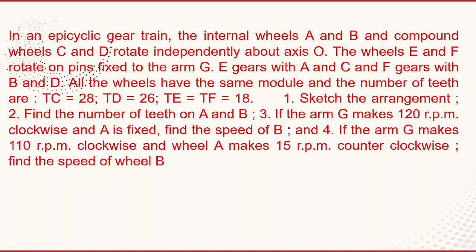All the wheels have the same module and the number of teeth are: TC equals 28, TD equals 26, TE equals TF equals 18. State the arrangement. Find the number of teeth on A and B. If the arm G makes 120 RPM clockwise and A is fixed, find the speed of gear wheel B. Fourth part: if the arm G makes 110 RPM clockwise and wheel A makes 15 RPM counterclockwise, find the speed of wheel B.